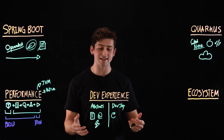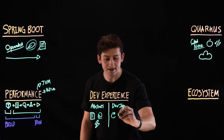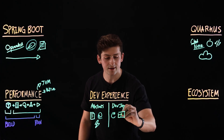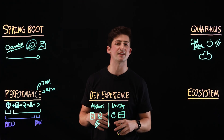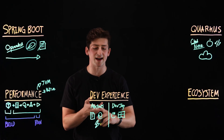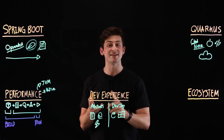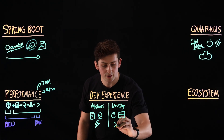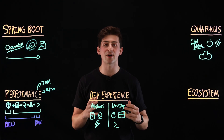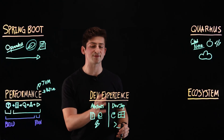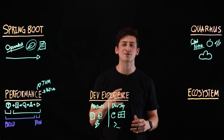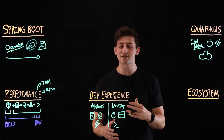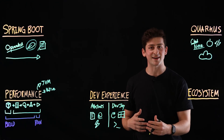Quarkus's developer joy includes components such as live coding and continual testing integrated by default, the Quarkus developer UI — a great way to visualize your dependencies and documentation — things like Swagger, and also the Quarkus CLI for interacting with your projects from the command line. So both frameworks offer their unique advantages when it comes to developer experience.